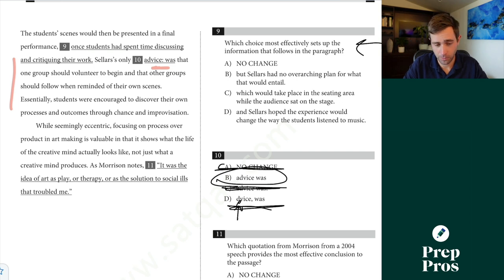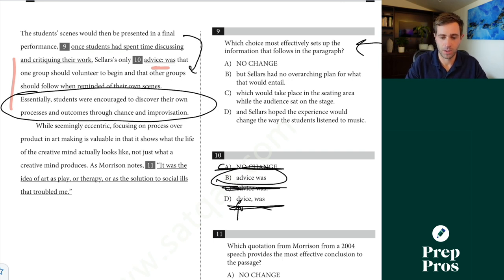So now we get to go back to this question. The students' scenes would then be presented in a final performance once students had spent time discussing and critiquing their work. This has nothing to do with what is discussed in the rest of the paragraph. The rest of the paragraph was really just basically saying he's not giving them much structure at all. He's just saying that one group should volunteer and the others should follow. Everything else is basically left up to the students' own process improvisation. That's why B is going to be our correct answer here. C, which would take place in the seating area while the audience sat on the stage has nothing to do with what's discussed after and we're adding new information that we can't back up from the passage. Seller hoped the experience would change the way students listen to music. No evidence of that as well. All right.